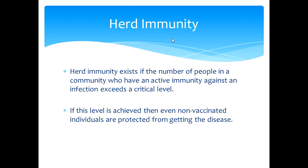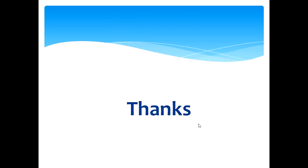Herd immunity: this is a term you come across daily in the media. Herd immunity exists if the number of people in a community who have active immunity against an infection exceeds a critical level. If this level is achieved, even non-vaccinated individuals are protected from getting the disease. Thank you very much — if you have any questions, you can ask in the YouTube channel comment section.